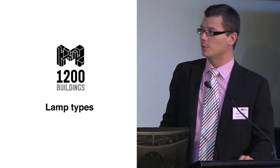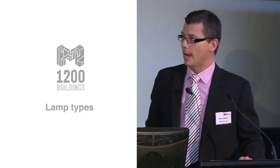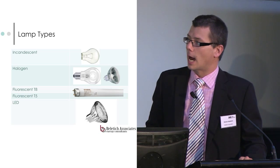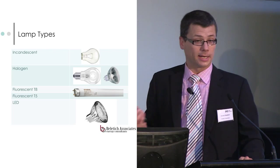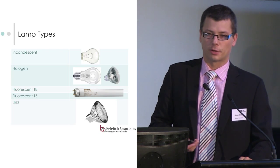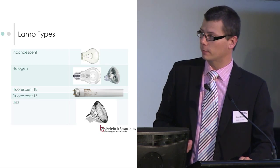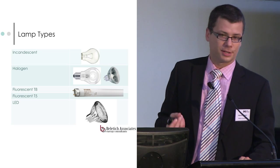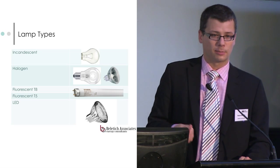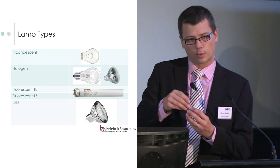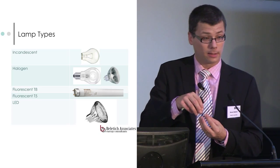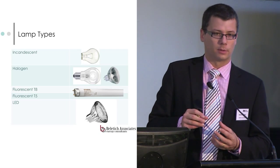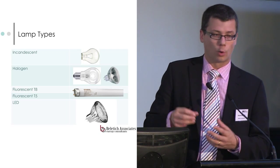To sort of break each of those down — lamps, there are various different types of lamps. Incandescent is the one we are now trying to get away from. Halogen lamps are very similar to incandescent, but they have a halogen gas within the lamp capsule, and that helps the lamp to run longer and more efficiently.